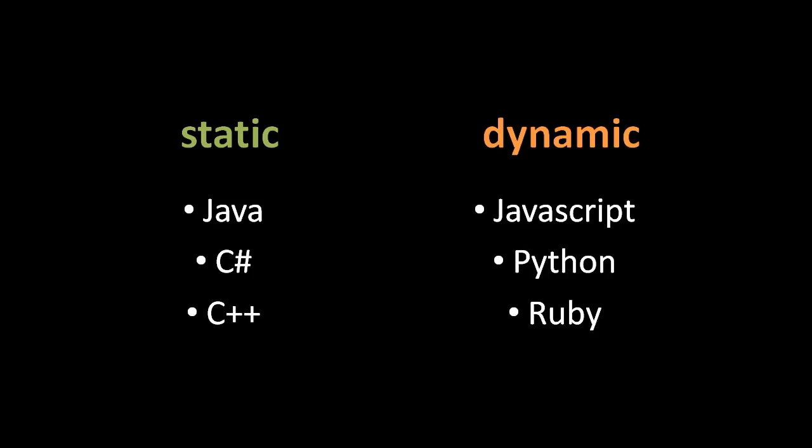Many popular programming languages today are considered object-oriented because they include features which assist or encourage the programmer to program in an object-oriented style — for example Java, C#, and C++ (statically typed), and JavaScript, Python, and Ruby (dynamically typed). JavaScript is actually kind of an oddball in that it uses an unusual mechanism called prototypical inheritance, which is what we saw when objects got linked together using the new operator. What's the point of that feature is something you should understand by the time we finish this unit.